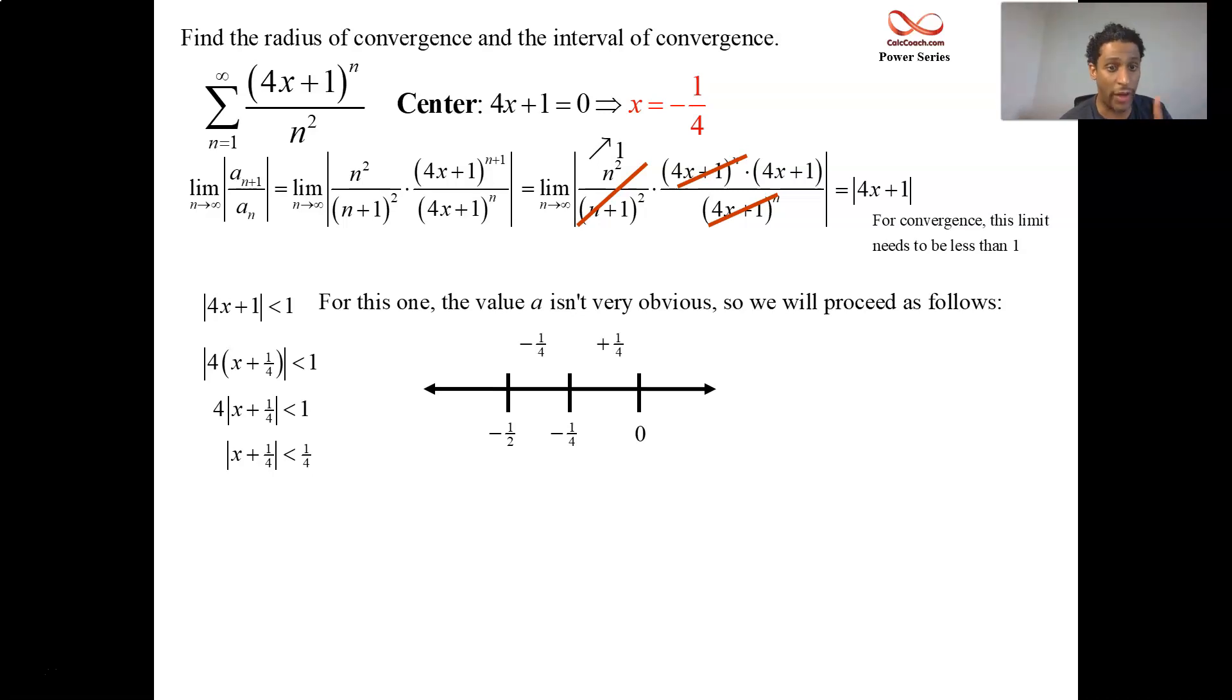Your radius of convergence is 1 fourth. So the interval of convergence are all numbers between negative 1 half and zero, but we're not done yet. We've got to check the endpoints. Perhaps we can include zero. Perhaps we can include negative 1 half.